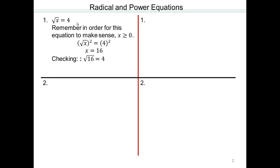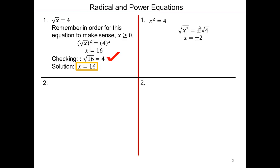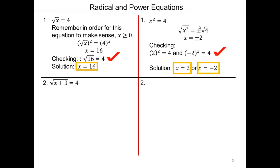On the other side, what if you had x squared equals 4 instead of square root of x equals 4? Something squared is 4, so you take square roots — but you inherit the plus or minus. Why? Because the square of a positive number and the square of a negative number are both positive. So x equals plus or minus 2, because 2 squared is 4 and negative 2 squared is also 4. Solutions: x equals 2 or x equals negative 2.